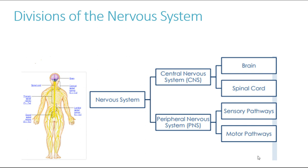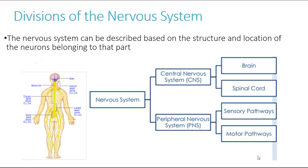We can divide up the nervous system in different ways. We can firstly divide it into our central nervous system, which comprises of the brain and the spinal cord, and also into the peripheral nervous system, the PNS, which makes up both the sensory and motor pathways. This is divided in terms of its structure and the location of the features that make up each division of the nervous system.